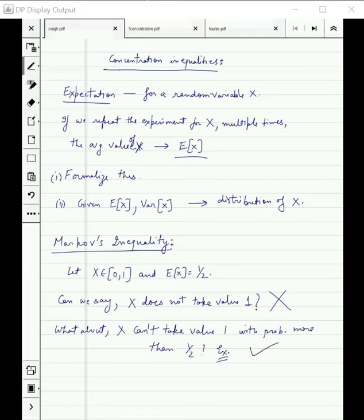So I give it as an exercise to prove that this is indeed correct. If the value of X lies between 0 and 1 and expected value of X is 1/2, then X cannot take value 1 with probability more than 1/2. If it does, then there will be something wrong with the calculation of expectation. Pause the video to prove it. Even if you can't prove it, the next theorem will prove it.